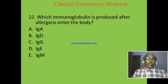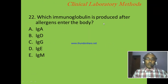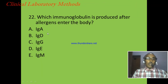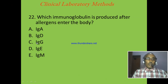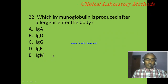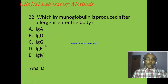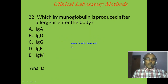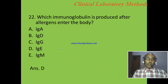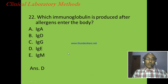Question 22: Which immunoglobulin or antibody is produced after allergens enter or have contact with the body? A: IgA, B: IgD, C: IgG, D: IgE, E: IgM. The correct answer is D: IgE, because this antibody is produced when allergen substances enter or have contact with the body, and they will attach themselves on mast cells.